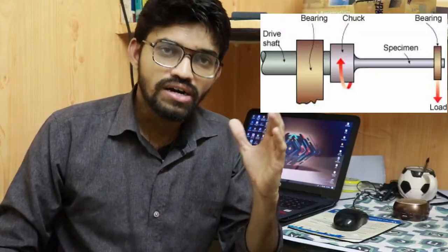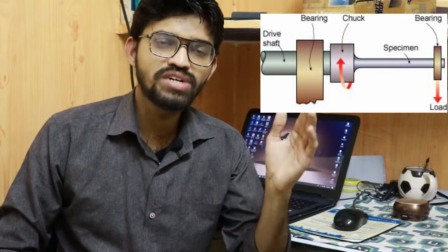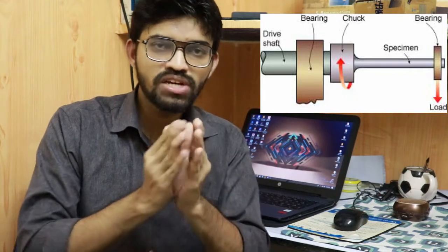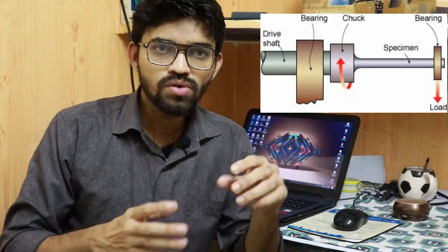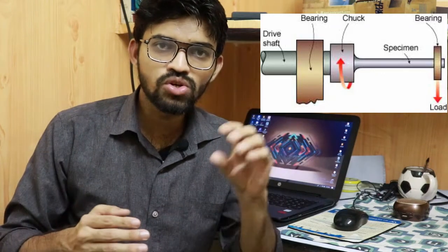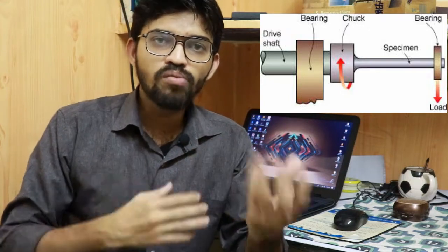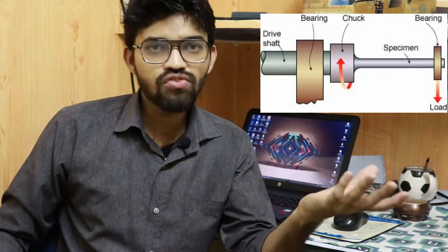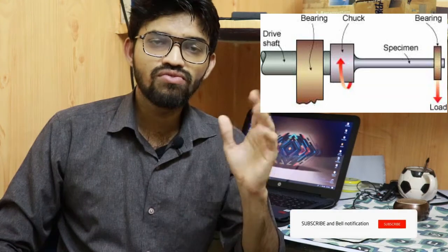There is a fatigue testing setup: the specimen is mounted on a shaft supported by bearings, and power is transmitted from a motor. An eccentric counterweight is attached, and when the motor rotates, the specimen also rotates. The eccentric counterweight creates a bending moment on the specimen, causing it to undergo cyclic stresses — just like the rod bending example. This is the machine used to test specimens for fatigue failure.